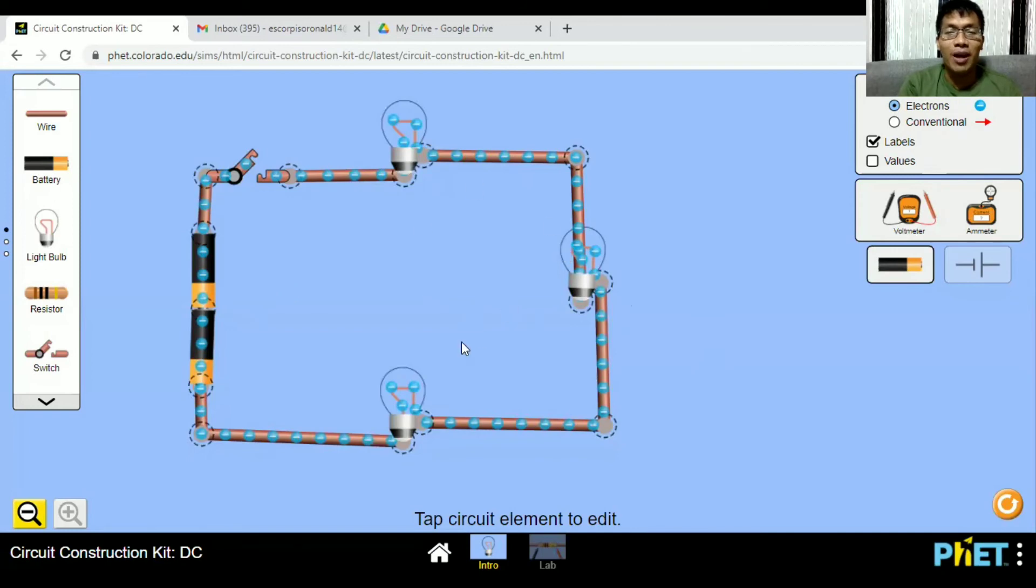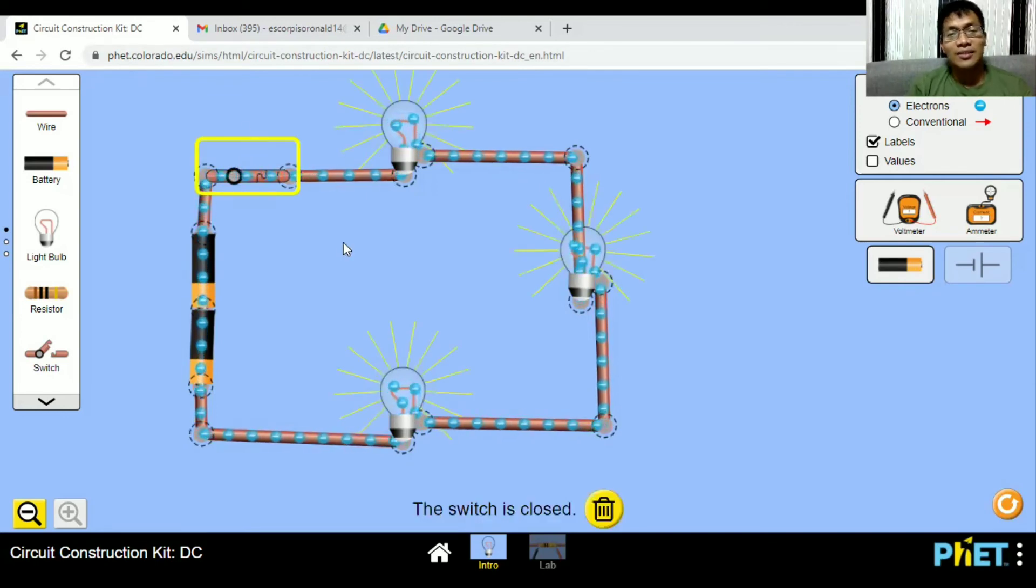Let's use this simulation to visualize how a series circuit works. We got here three bulbs connected in series, then a switch and two batteries. If you observe, we only have a single loop. So again, this is a series connection. Now, when I turn on the switch, you see that all of them are working. So they are emitting light.